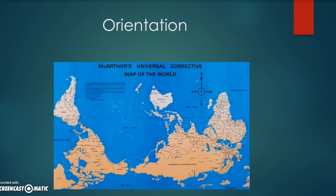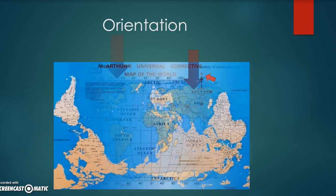When reading a map, we start with orientation. You can see the little compass there — that shows you what you're looking at. In this example, the south is at the top and the north is at the bottom, along with west and east. That will orient you so you know what you're looking at. Usually, north is at the top, but not always.